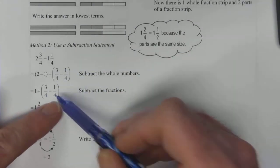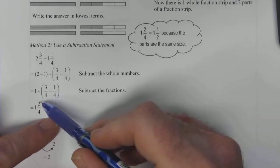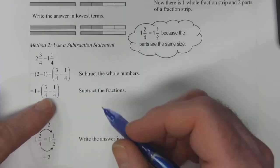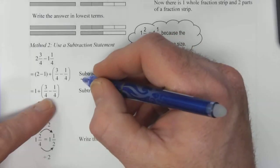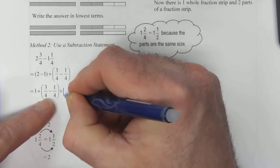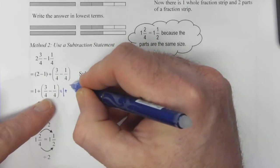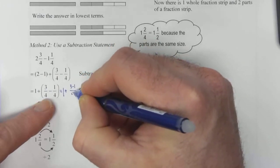And we know because there's a common denominator that we can subtract. So that is equal to one, which is the whole, plus we can do three minus one over four.